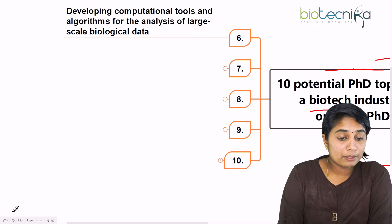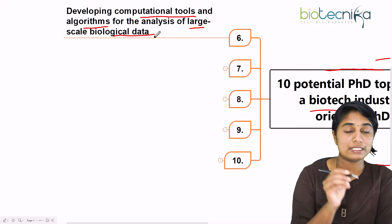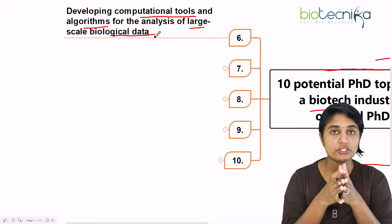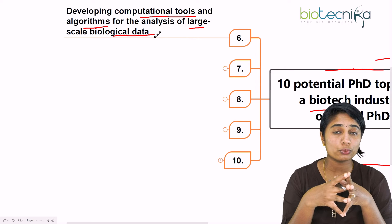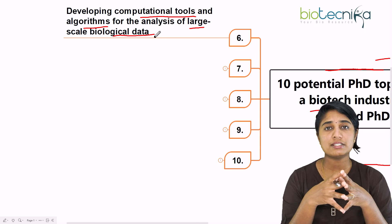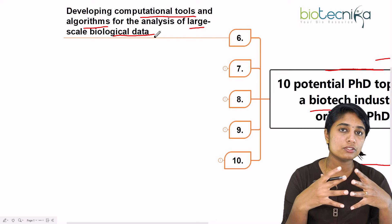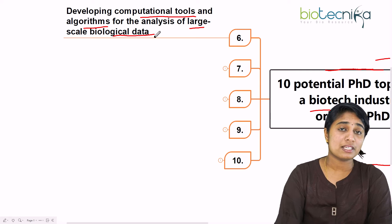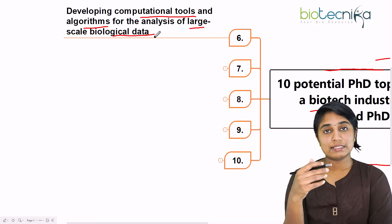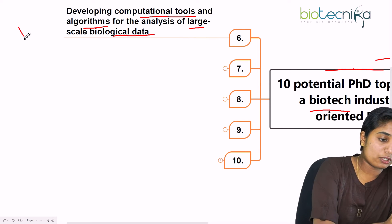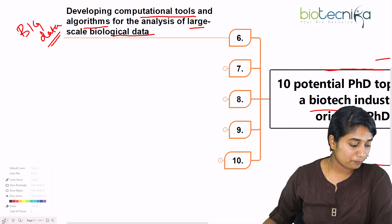The sixth topic is developing computational tools and algorithms for the analysis of large biological data. Because of the Human Genome Project, we have a lot of biological data — sequences, 3D structures of proteins, relationships between proteins and molecules, drug discovery data. If you're somebody interested in bioinformatics, computers, and biology, you can look at developing computational tools and algorithms for analyzing large-scale biological data, also called big data. This is one upcoming field to consider.